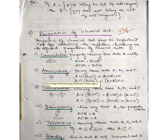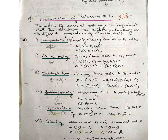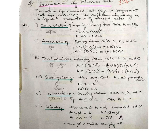Coming to the properties of the Classical Set, the first is the commutative property: A union B equals B union A, and A intersection B equals B intersection A — both parts are mirrors of each other. The second is the associative property for three sets: A union (B union C) equals (A union B) union C, and similarly for intersection — all three circles are interlinked.